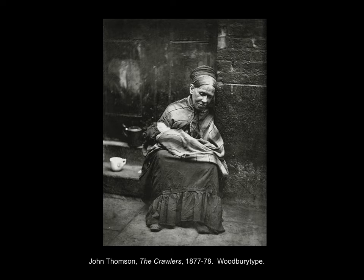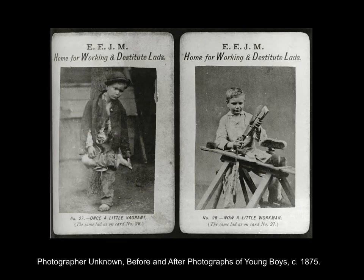Here we see the people as opposed to the structures becoming the focus, as John Thompson undertakes a survey of London's poor for a publication called Street Life in London, issued in installments beginning in 1877 with accompanying text by Adolph Smith. The public was interested in these publications as government-sponsored welfare programs were beginning to be accepted as part of modern life. Crawlers were old women so feeble from hunger and lack of sleep that they literally crawled on their hands and knees to beg for bread and hot water for tea.